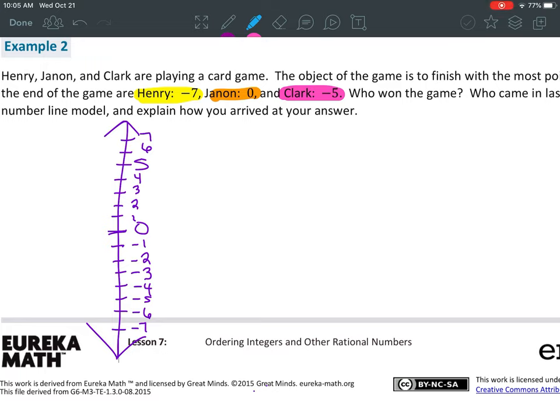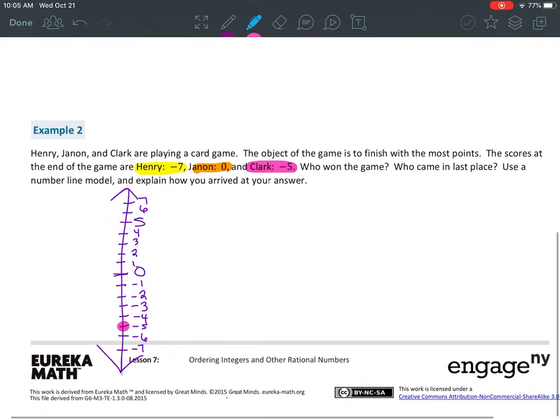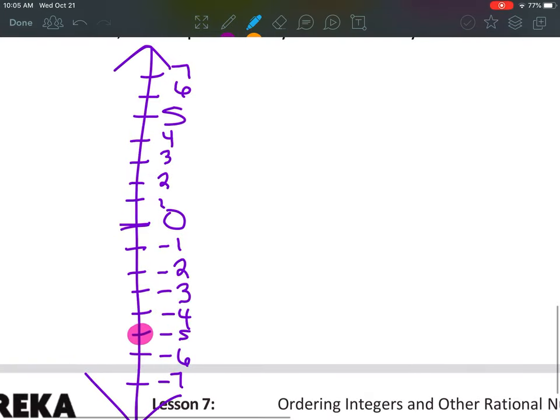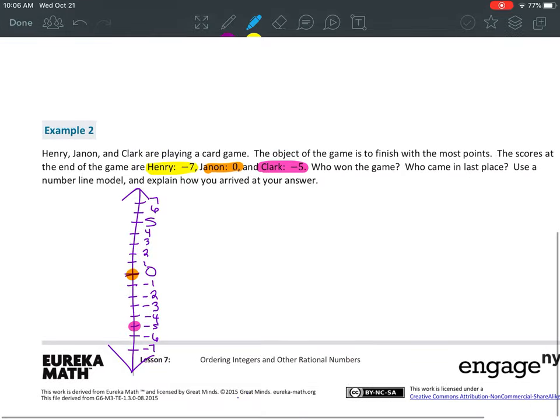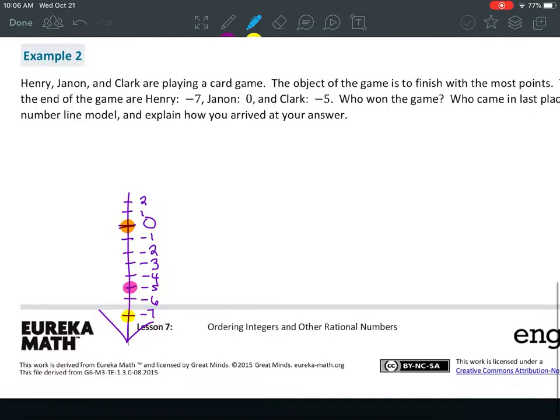All right, so Clark. I'm just going to go to Clark first because that's the highlighter color I have up. Clark got a negative 5. So, I'm going to go put a dot on negative 5 for Clark. I'm going to change to orange for Janon. He got 0 points. And go to yellow for Henry who got negative 7.